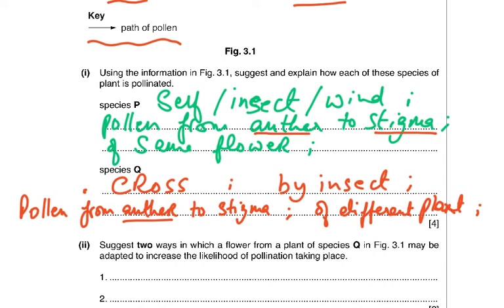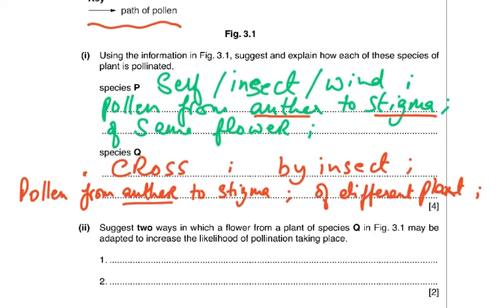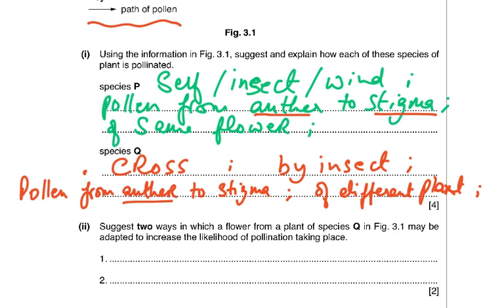Using figure 3.1, suggest and explain how each species is pollinated. Species P: self-pollination — pollen from the anther to the stigma of the same flower. Species Q: cross pollination by insect — pollen from the anther to the stigma of a different plant. These are four marks: two for species P and two for species Q. Use the biological terms anther and stigma in your answer.